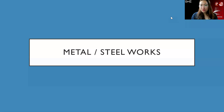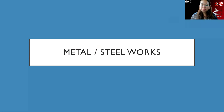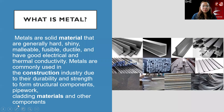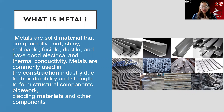This is the metal and steel work lecture for building materials. I have already uploaded the PDF version, but I will add some additional inputs aside from what's in the PDF, so you can watch this video. So, what is metal? These are solid materials that are generally hard, shiny, malleable, fusible, ductile, and have good electrical and thermal conductivity. It's commonly used in the construction industry for their durability and strength.